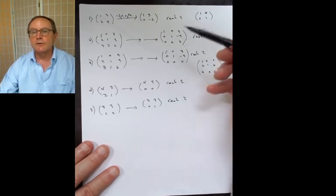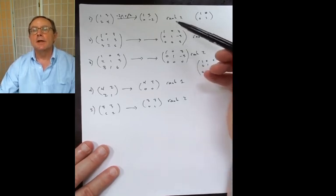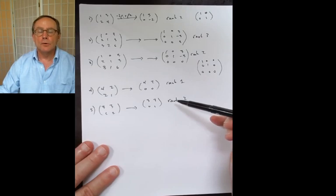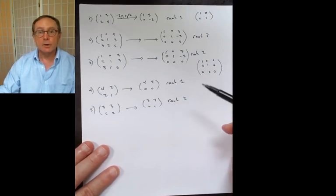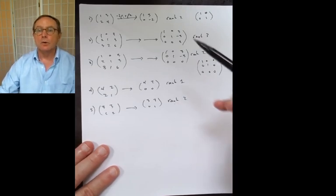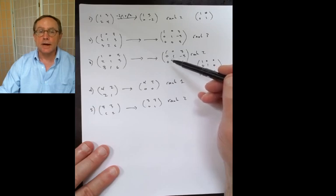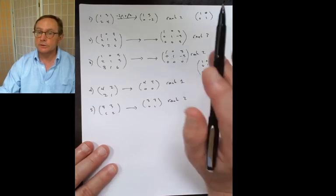So what we're seeing is that matrix one and matrix five are both two-by-two matrices of rank two, so they're equivalent. Notice that matrix three is also of rank two, but it's not two-by-two — so it's not equivalent.